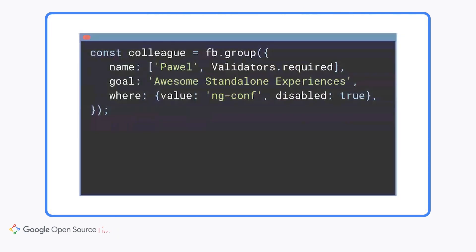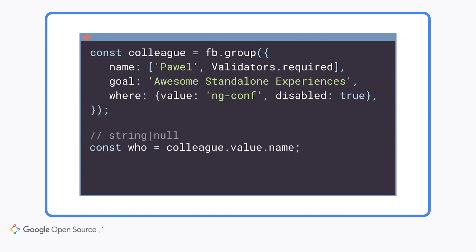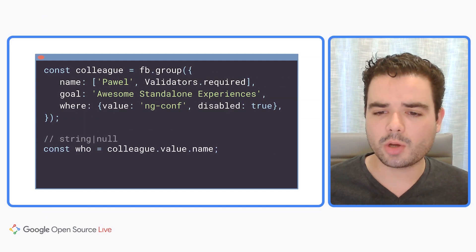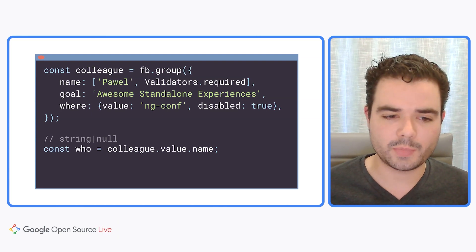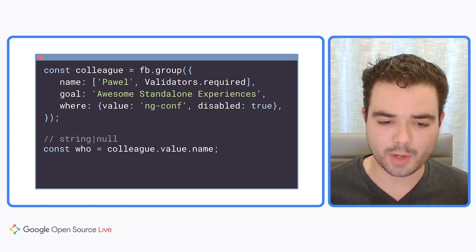Here's a typical usage of FormBuilder's group method. We have a name key using array shorthand notation containing a value and validators, a goal key populated with a bare value, and a where key with a value-disabled object. FormBuilder has an extremely polymorphic API — you can pass it bare values, value-validators tuples, objects with a value and disabled key, and several more argument formats. In the overwhelming majority of these cases, it is still possible to automatically infer the types. So in this example, the value of name will be inferred as string or null.